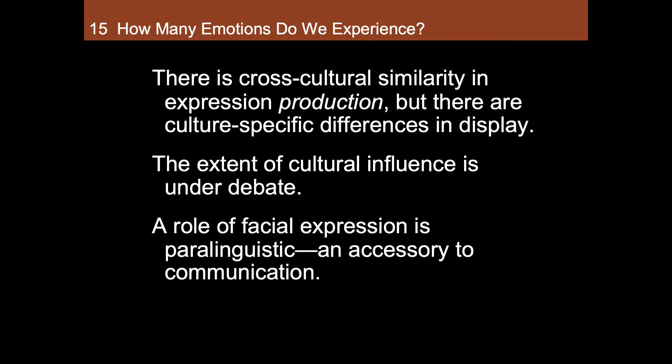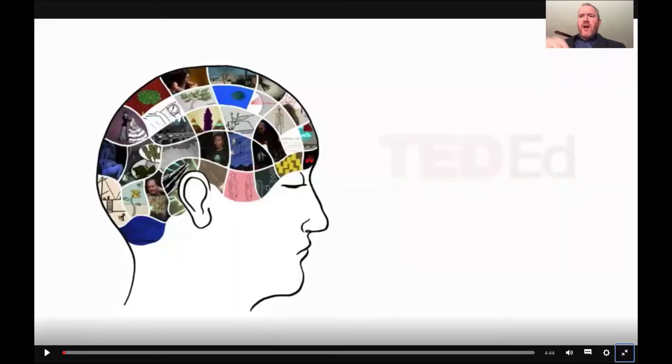Emotional states are at least partially caused by the autonomic nervous system. The sympathetic nervous system would activate the body, whereas the parasympathetic nervous system would relax the body, including the face. Here's just a five-minute video clip that I think is very well done detailing some of these observations.